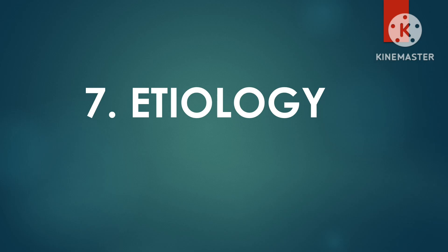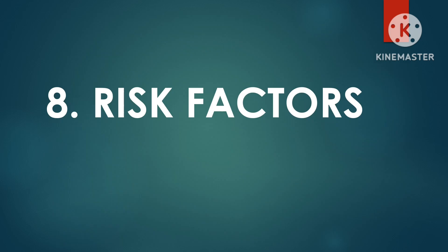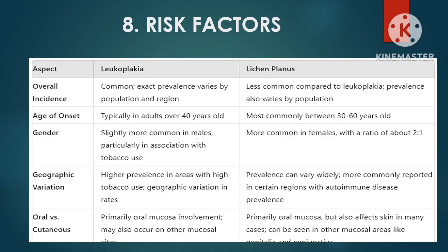The etiology of leukoplakia is mainly chronic irritation from tobacco use or alcohol consumption. It may be occasionally linked with HPV infections, but is not typically associated with autoimmune factors or systemic conditions. Lichen planus, on the other hand, is autoimmune in nature and is often triggered by stress and systemic conditions.